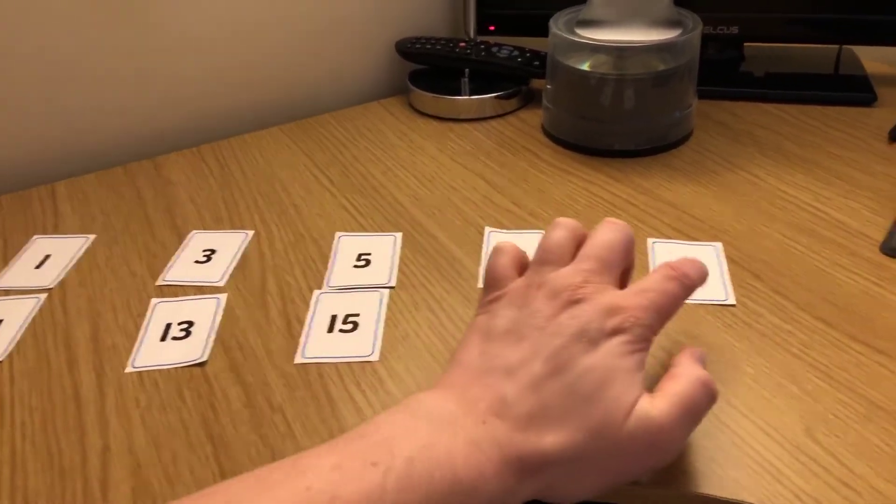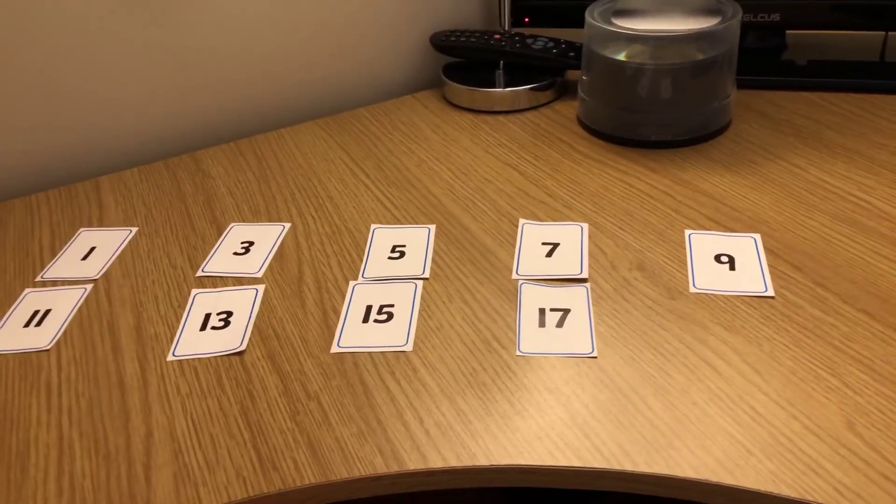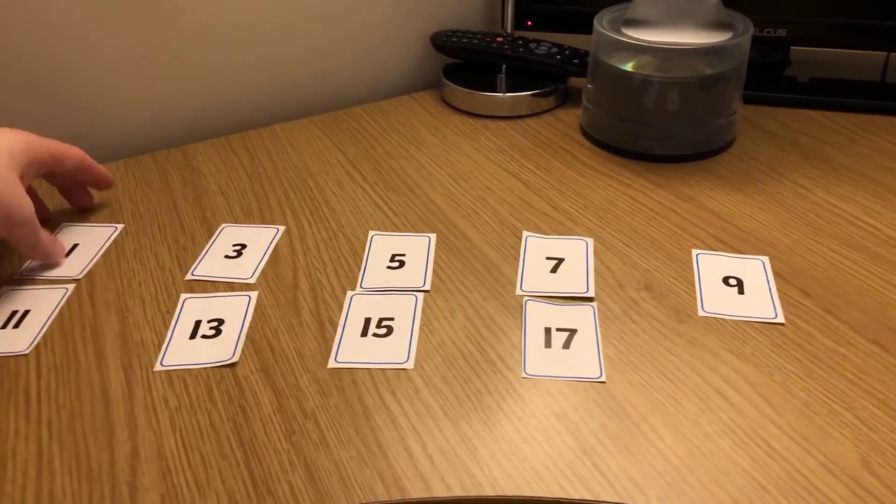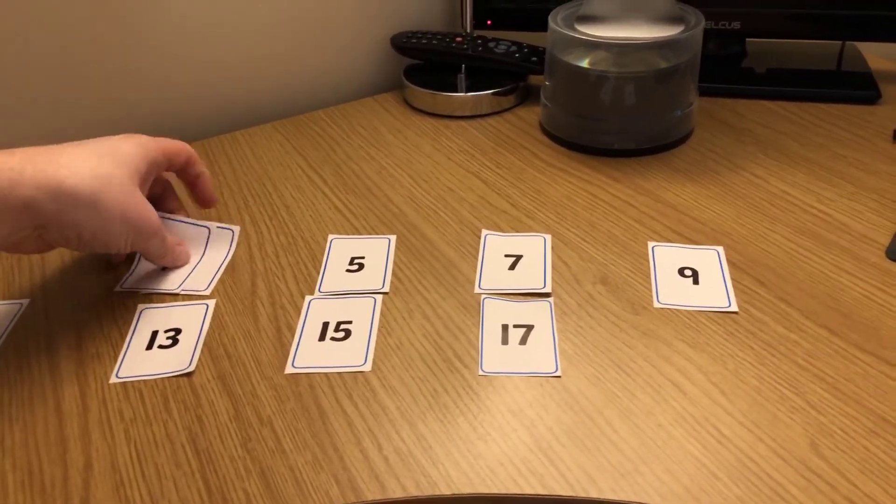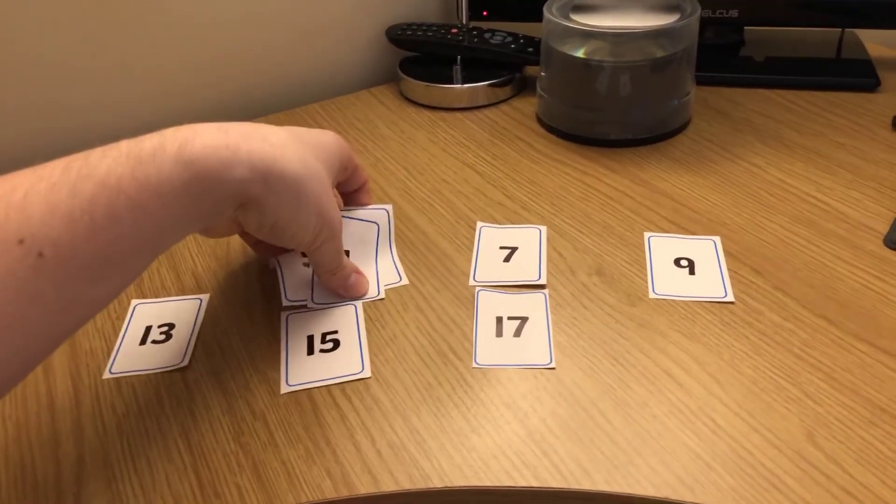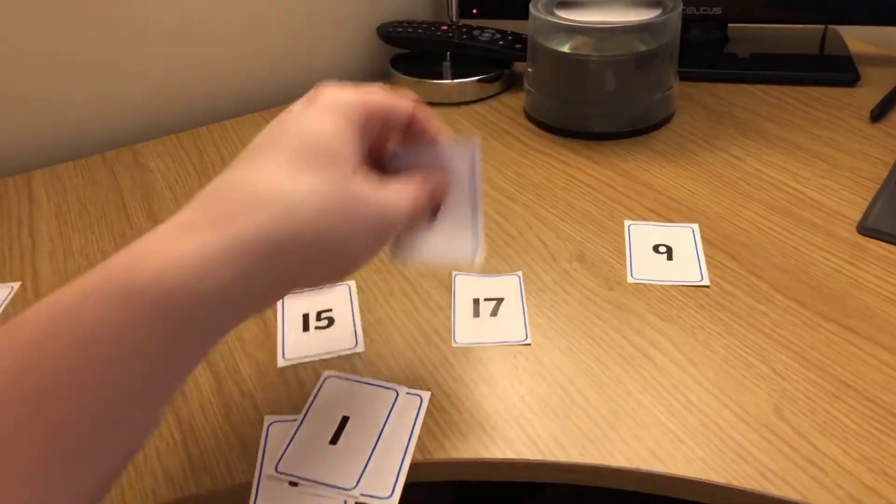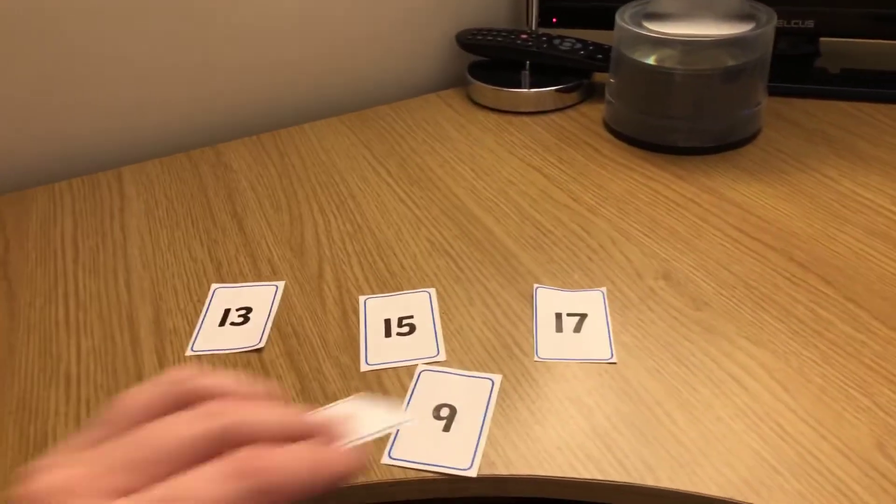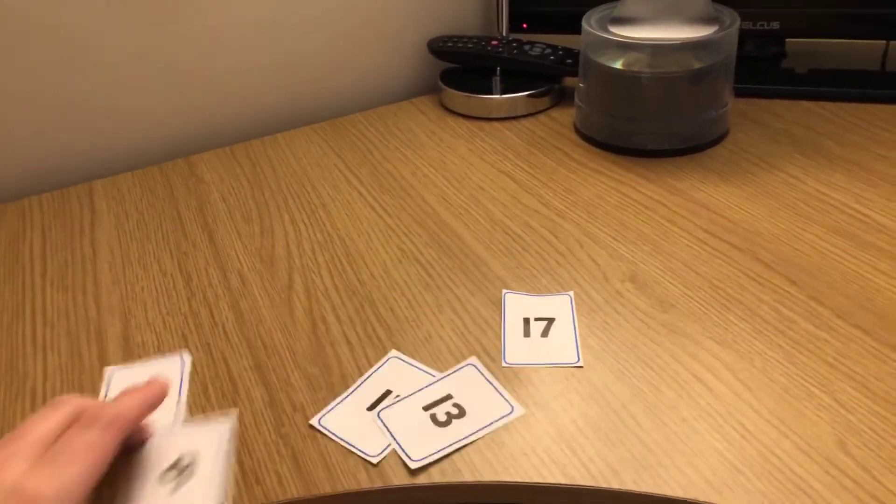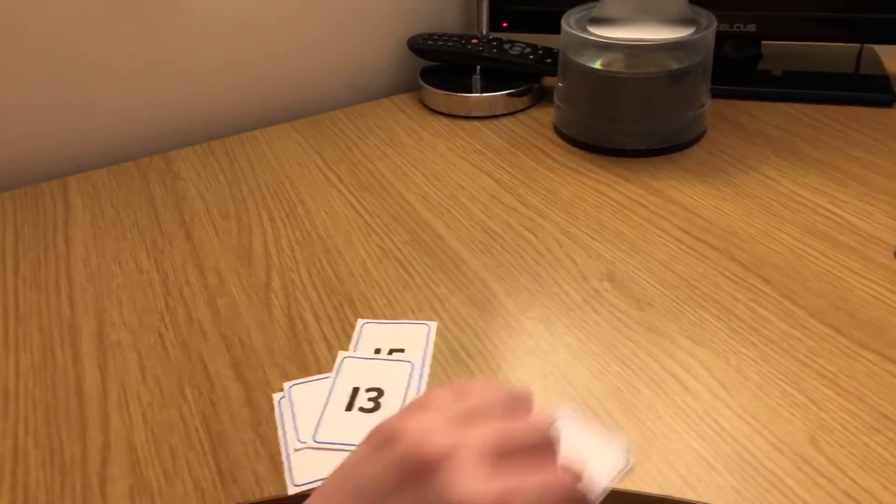So any number that ends with a one, a three, a five, a seven, or a nine is odd. Right, let's collect them in, saying them. So one, three, five, seven, nine, eleven, thirteen, fifteen, that was a bit messy, seventeen. Right, well done for doing that game.